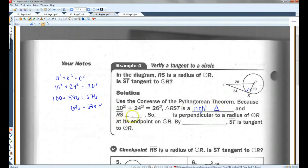So triangle RST is a right triangle. And RS is perpendicular to ST. So ST is perpendicular to a radius of circle R at its end point on circle R. By theorem 10.1, ST is tangent to circle R.